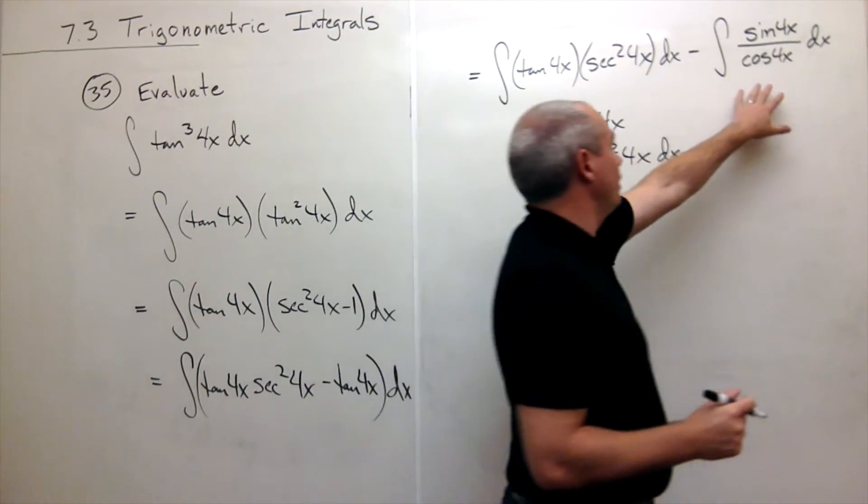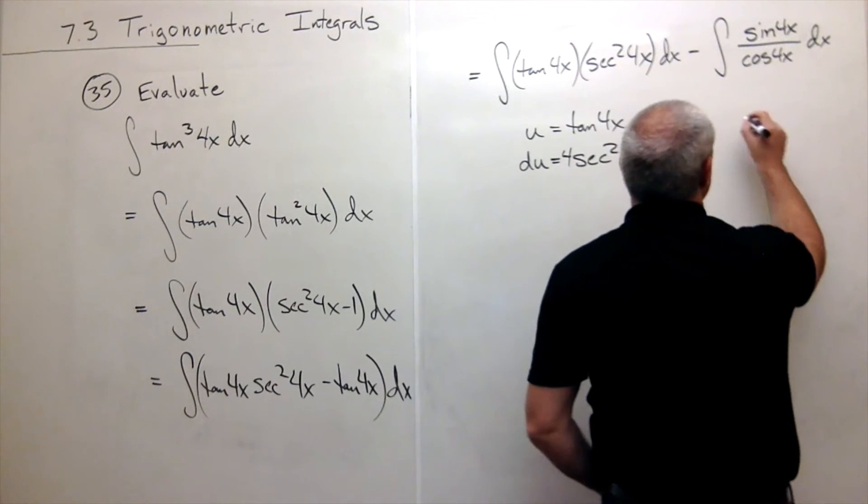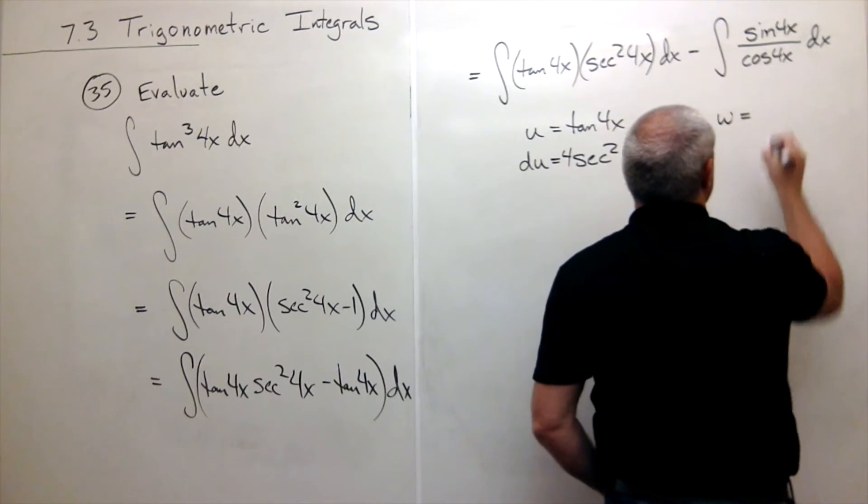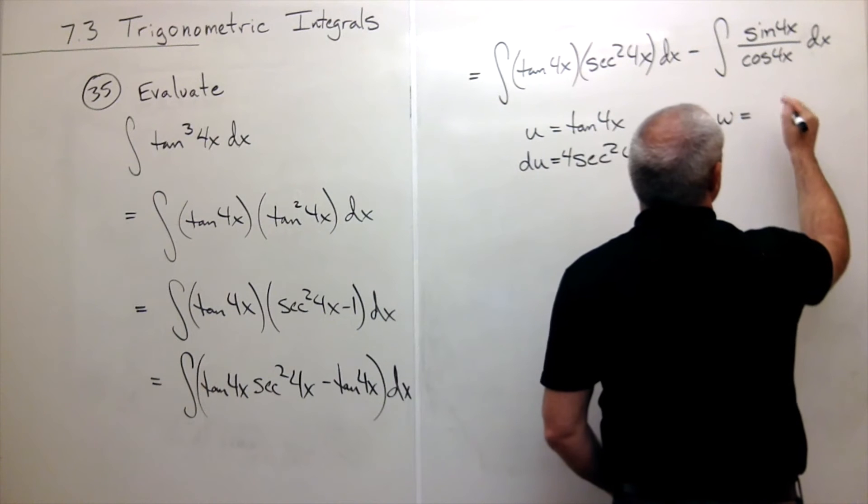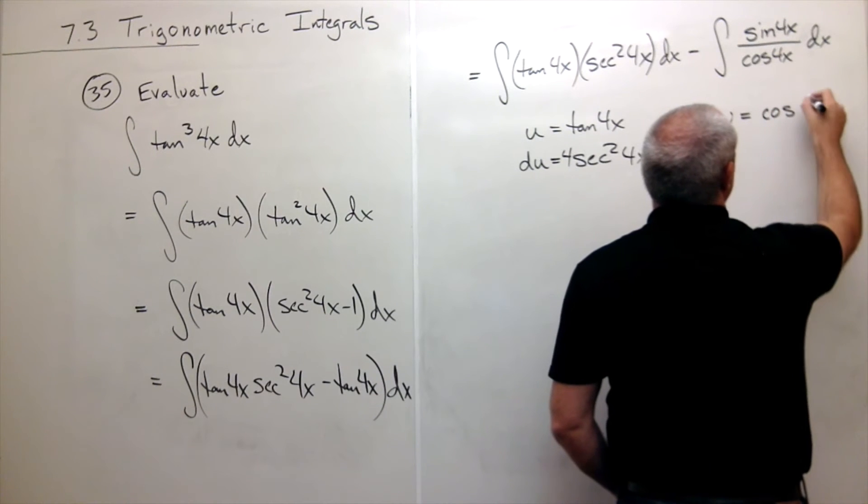Let's look over here. I'll use a different letter, not u. Let's use w. So I'm going to let w equal cosine of 4x.